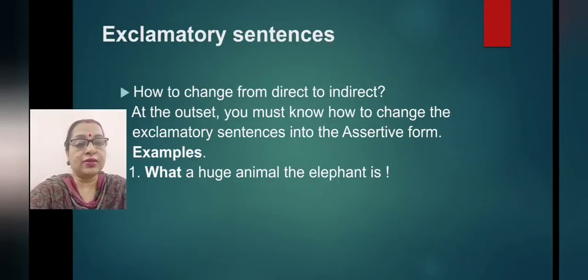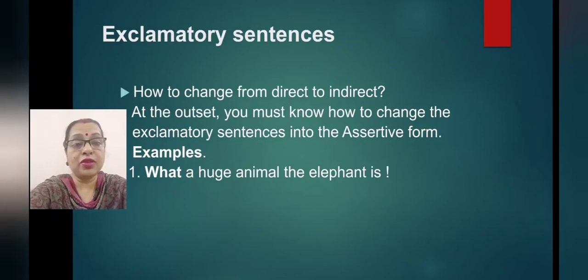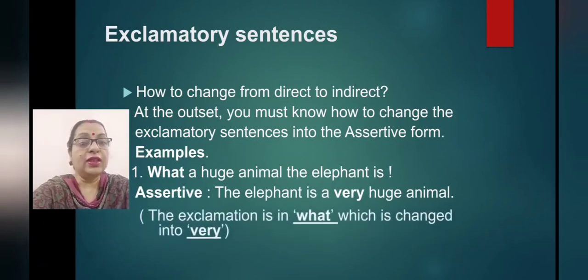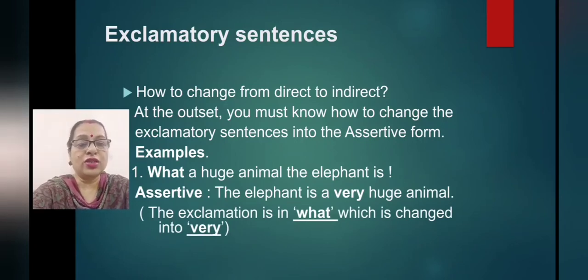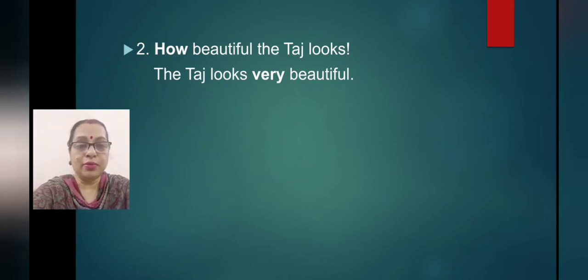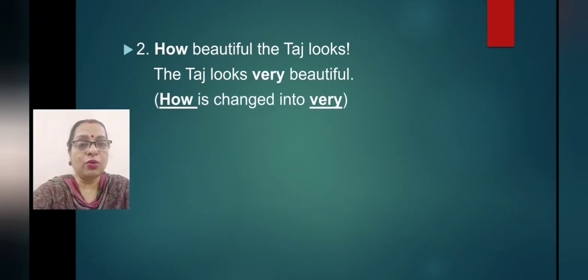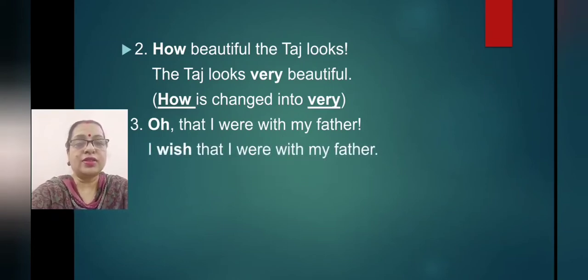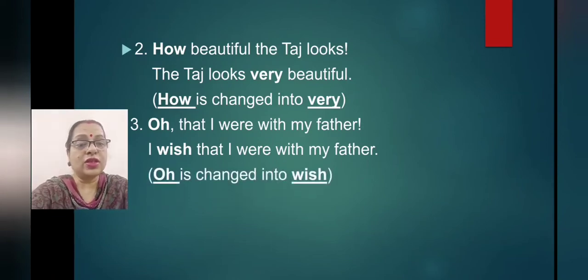Next, exclamatory sentences. First you must know how to change exclamatory sentences into assertive form. Example: 'What a huge animal the elephant is!' becomes 'The elephant is a very huge animal.' 'How beautiful the Taj looks' becomes 'The Taj looks very beautiful.' The 'what' or 'how' in exclamations is changed into 'very.' 'Oh, that I were with my father' becomes 'I wish that I were with my father' — 'oh' changes to 'wish.'